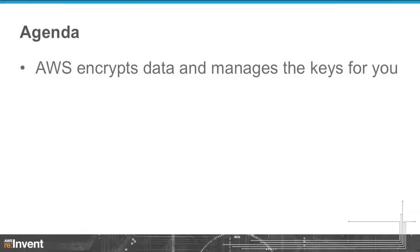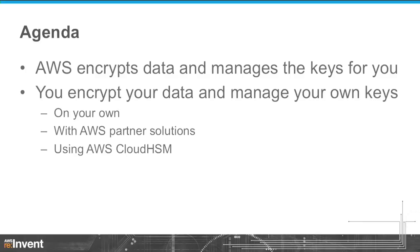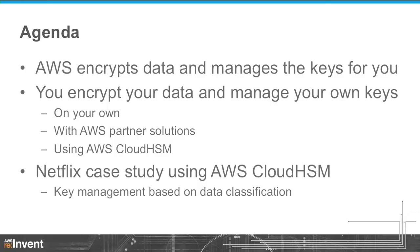This presentation is broken up into three different sections. We're going to talk about ways in which AWS can automatically encrypt the data and manage encryption keys on your behalf. We'll talk about ways in which you do the encryption yourself and manage your own keys — either completely on your own, with the help of a partner solution, or with the help of a new service for key storage that we announced earlier this year called Cloud HSM. Finally, Jason will come up and talk about Netflix and their use of Cloud HSM to protect their master keys.